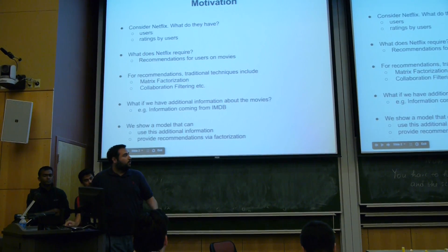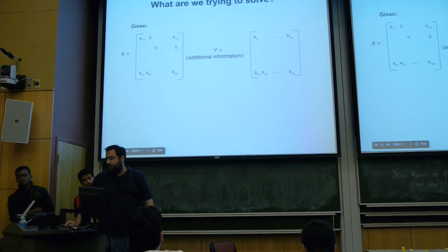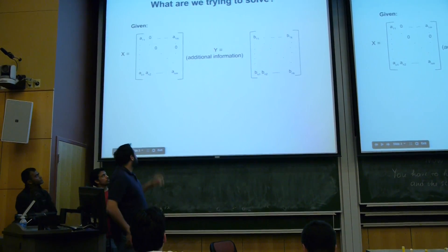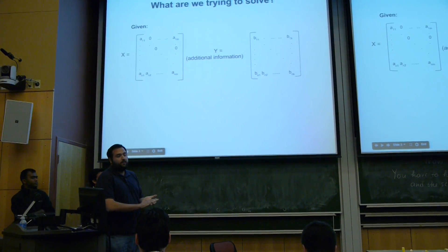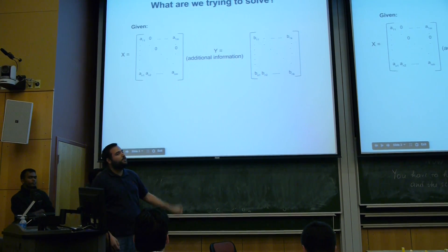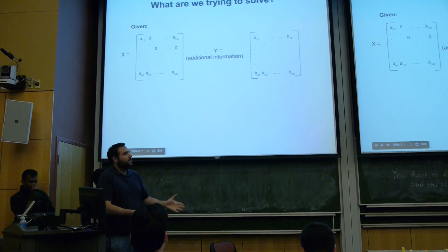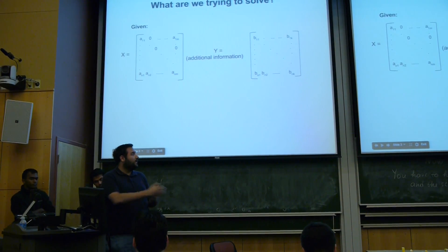And we're going to show how we do this using a factorization model. Here's a more formal definition of what we do. Let's say this matrix X is the matrix that stores the Netflix data. The rows are the movies and the columns are the users. And each coefficient is either the rating that somebody gave or zero, which means that this person hasn't seen the movie, hasn't rated it.